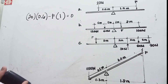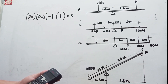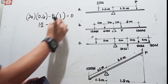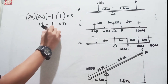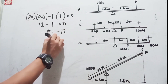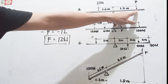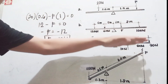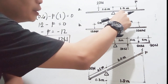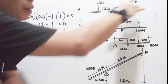So we multiply: 20 times 0.6 equals 12. Then 12 minus F times 1 equals zero, so F equals 12 Newtons. You need 12 Newtons at a distance of 1 meter for this system to be in equilibrium. So 20 Newtons at 0.6 meters and 12 Newtons at 1 meter — they won't move. It's in equilibrium.